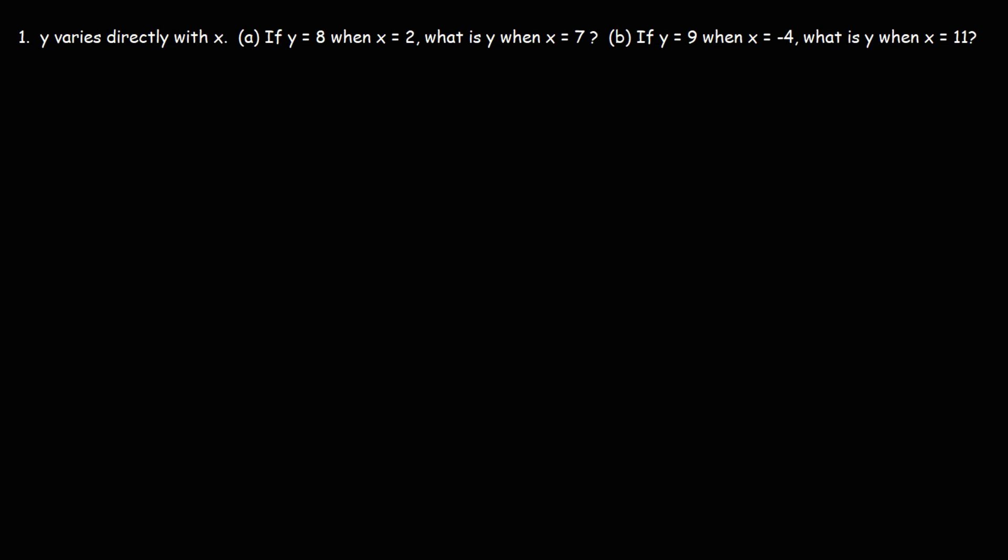Let's start with number one. Y varies directly with X. If Y equals 8 when X is 2, what is Y when X is 7? So the first thing we want to do, step one, is to calculate K, the constant of variation.